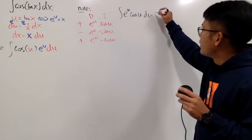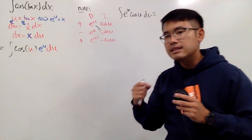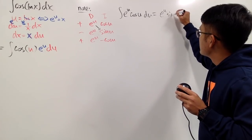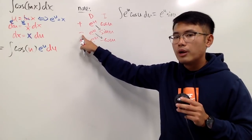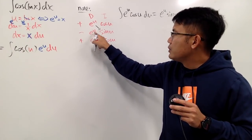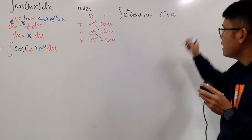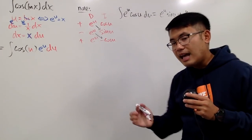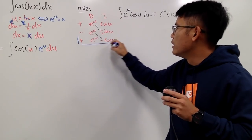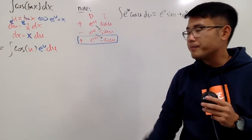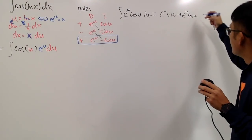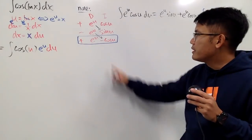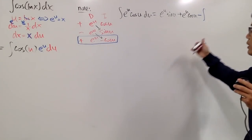Multiplying along the diagonals with the signs in front: the first part of the answer is positive e to the u times sine u. The second diagonal gives minus e to the u times negative cosine u, which becomes plus e to the u cosine u. The product of the last row is still an integral: minus the integral of e to the u cosine u du, since positive times minus gives minus.